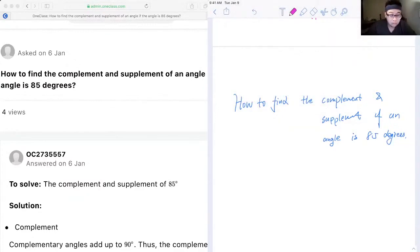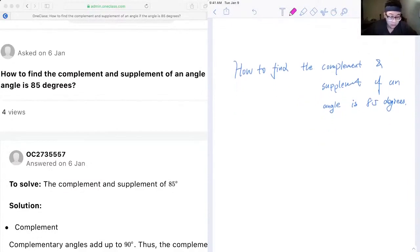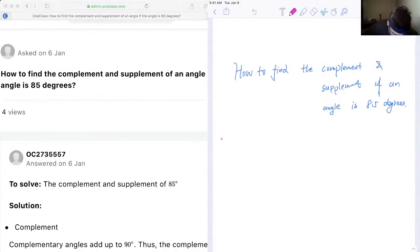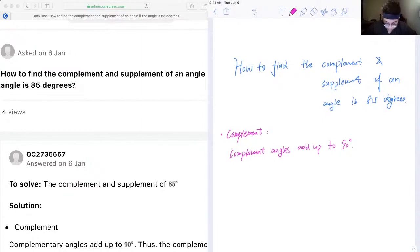Okay, so first let's recall the definition of complement. Complement angles add up to 90 degrees.